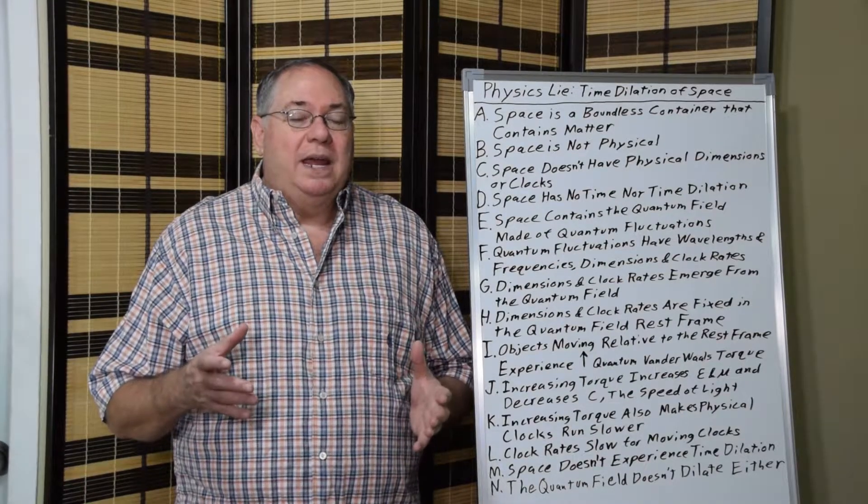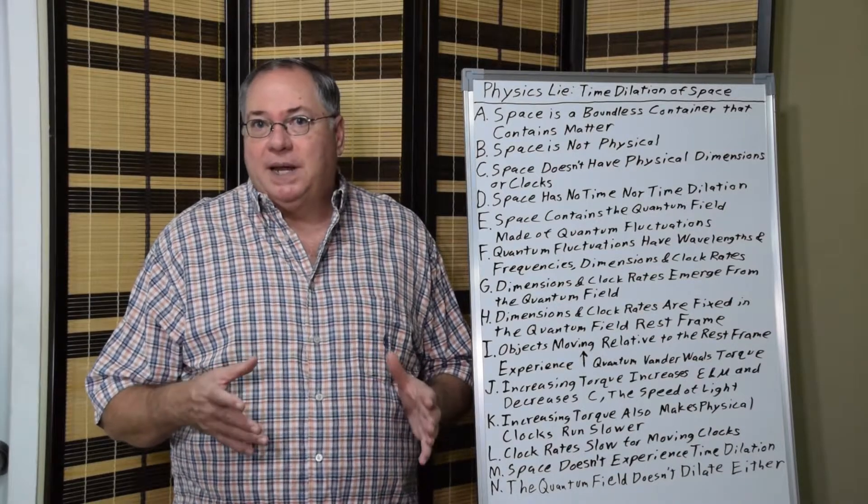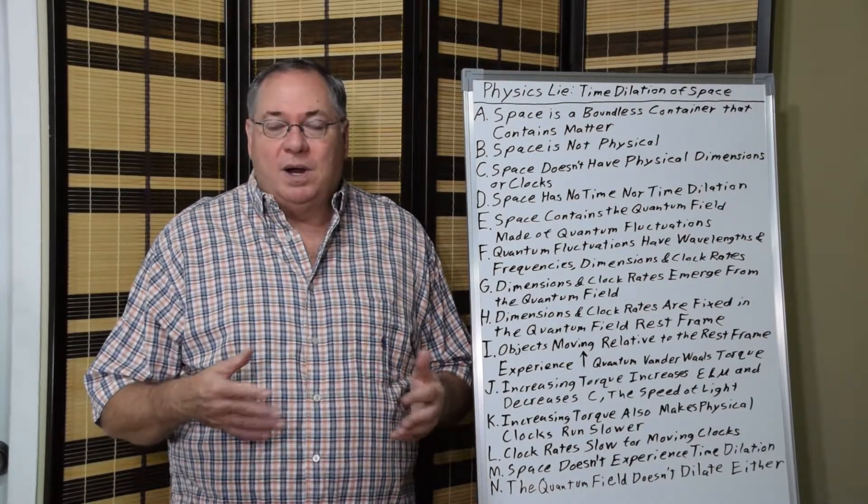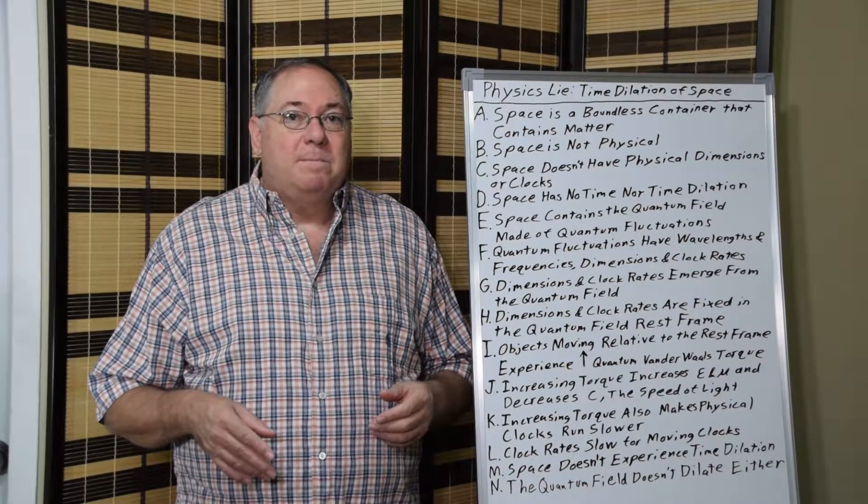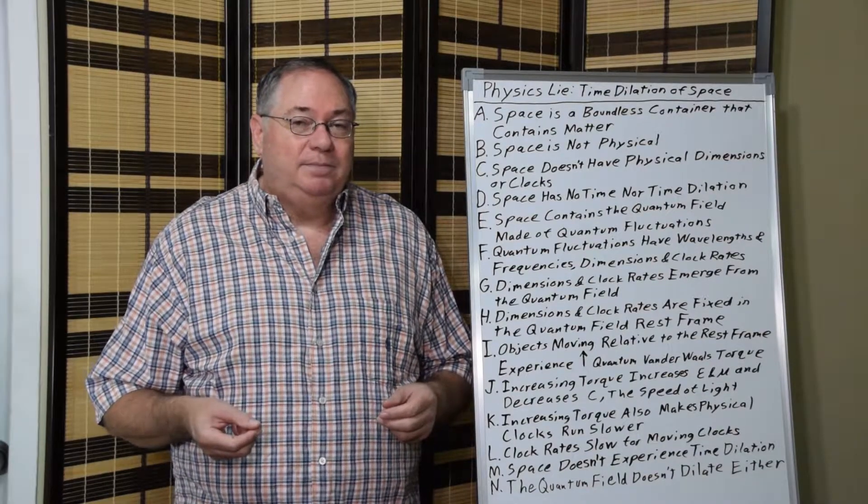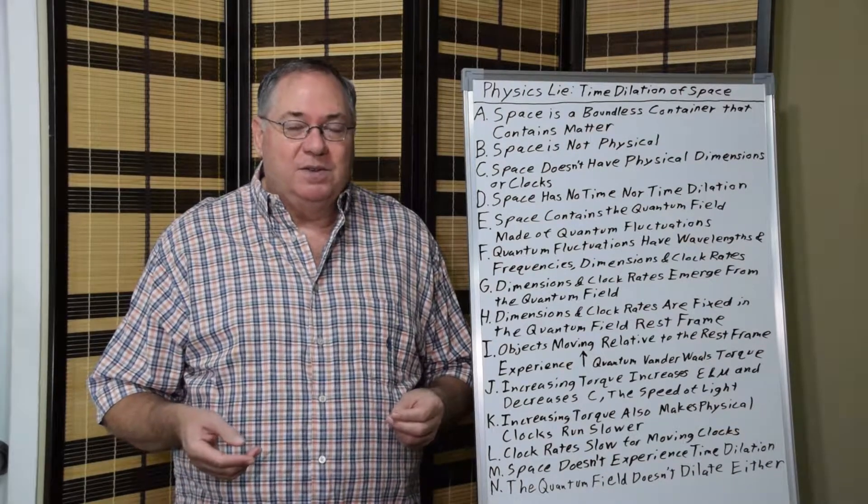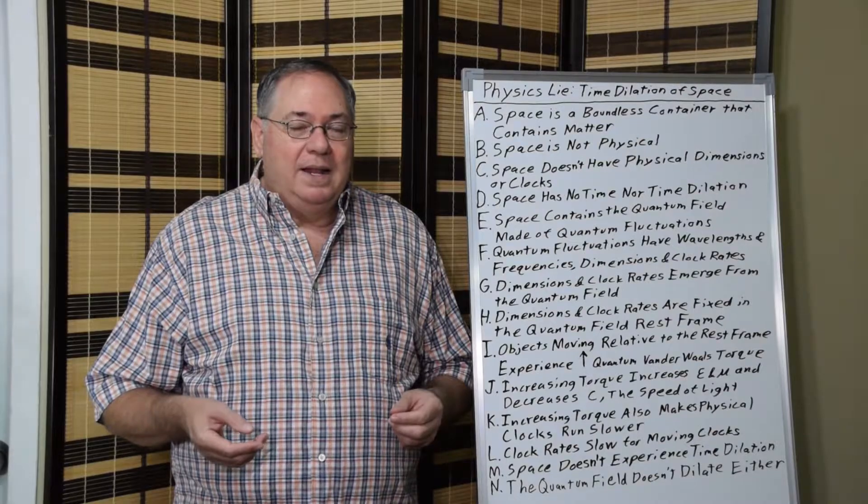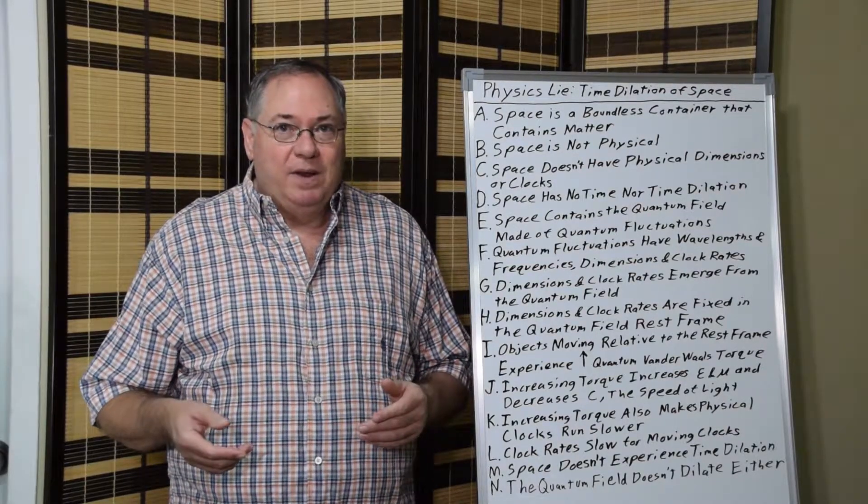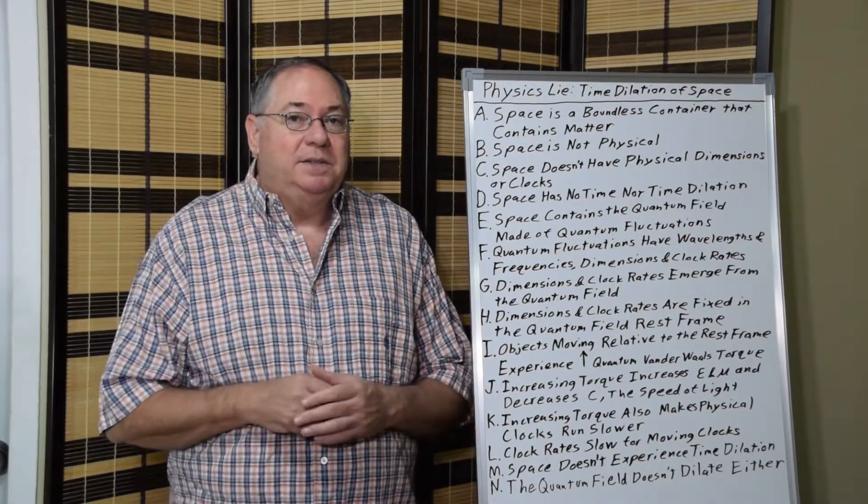This is another one of Einstein's lies. What he imagined as part of his thought experiments is that space was not physical, had no ether, no quantum field. But he imagined that it had physical dimensions and physical clocks anyway, without saying where those physical dimensions and physical clocks came from. Then he imagined that those physical dimensions and physical clocks could change. And with clocks he called this time dilation, or time dilation of space.